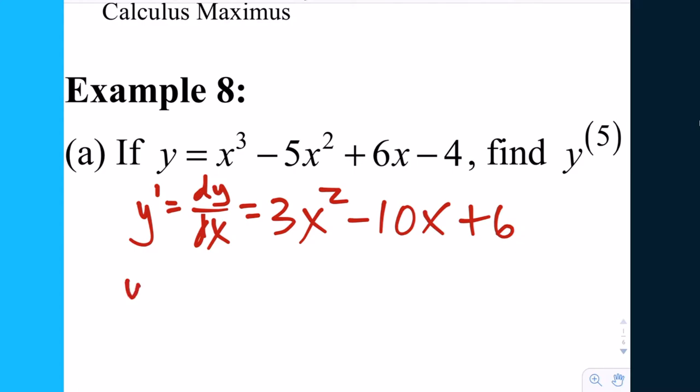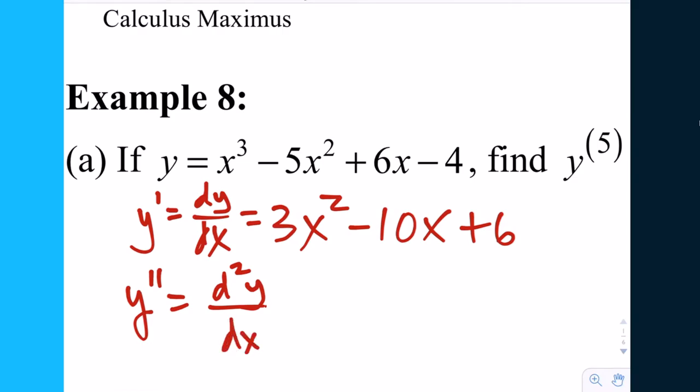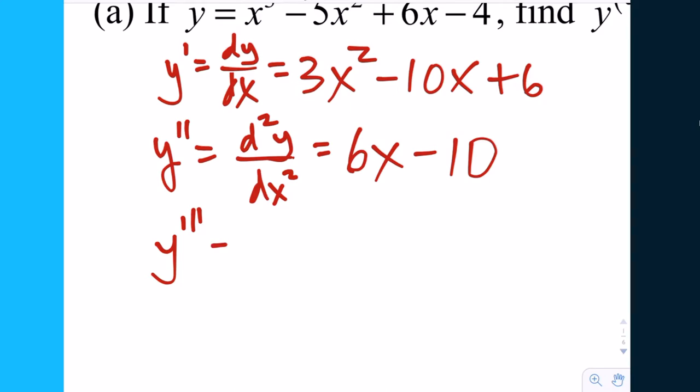The second derivative, that would be y double prime. And Leibniz notation would be d squared y over dx squared. That would be the derivative of the first derivative, which is 6x minus 10. If you're talking about kinematic equations, y would be your position, y prime would be your velocity, and y double prime would be your acceleration. Y triple prime, the notation is cumbersome, tedious, and perhaps sometimes a burden. But it's also easy to write it down to gain the points.